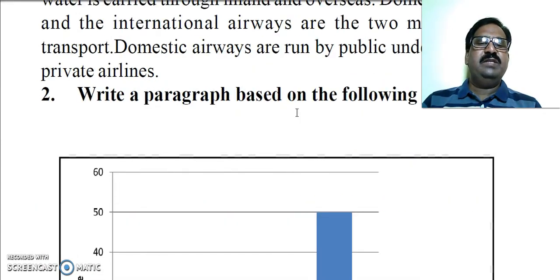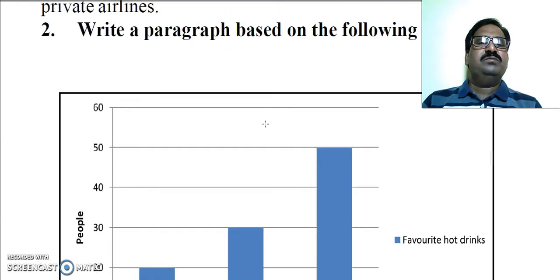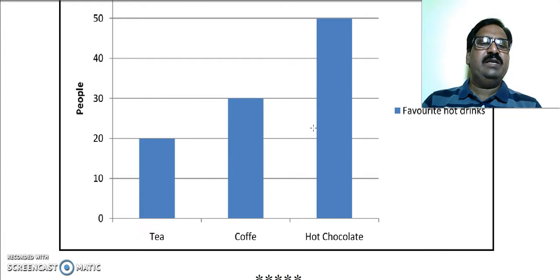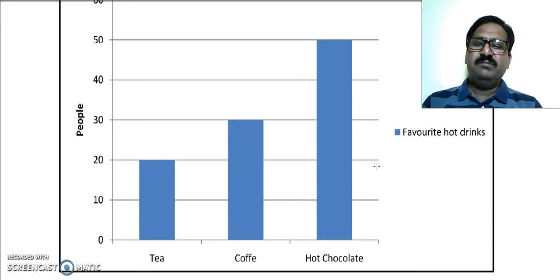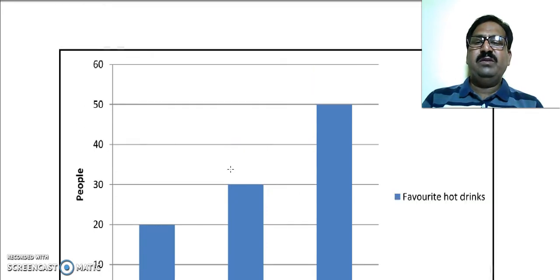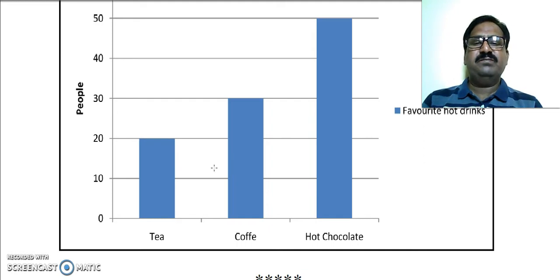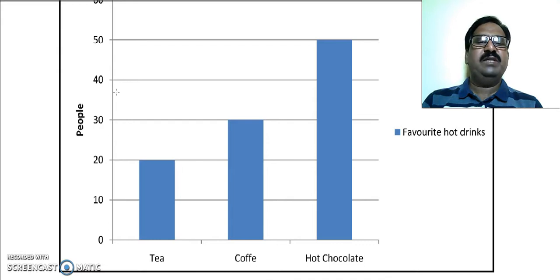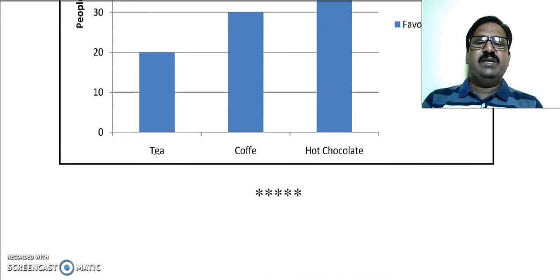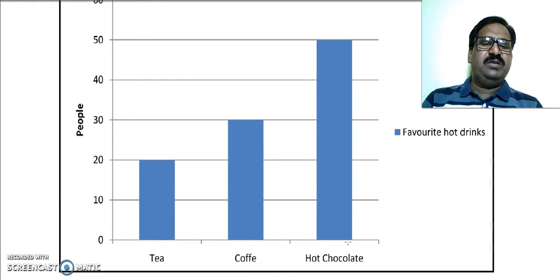Here is also an example of a bar diagram. You can compare this particular information. The favorite hot drinks of people are shown, and how many people enjoy such beverages is given in the bar diagram. The percentage of people is shown on the left side: 10, 20, 30, 40, 50, etc. The bars show tea, coffee, and hot chocolate.